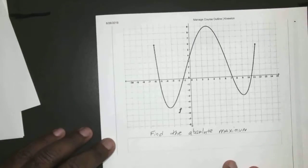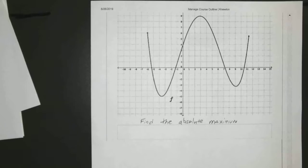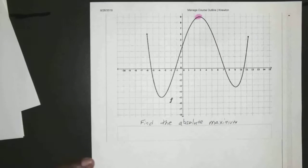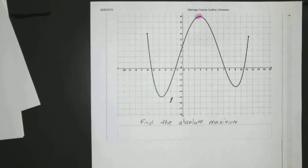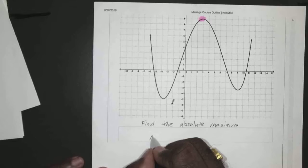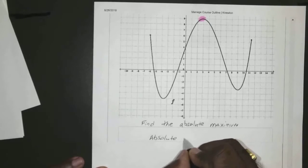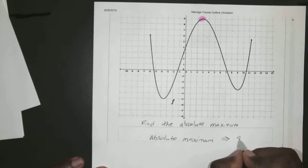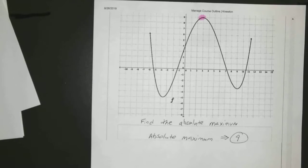And here this one is just a little trickier but same thing, you want to find the absolute maximum. You just look for the highest point. That's your highest point in the graph, so your absolute maximum will be nine. Alright, so any questions on that so far? So that part's not too bad.